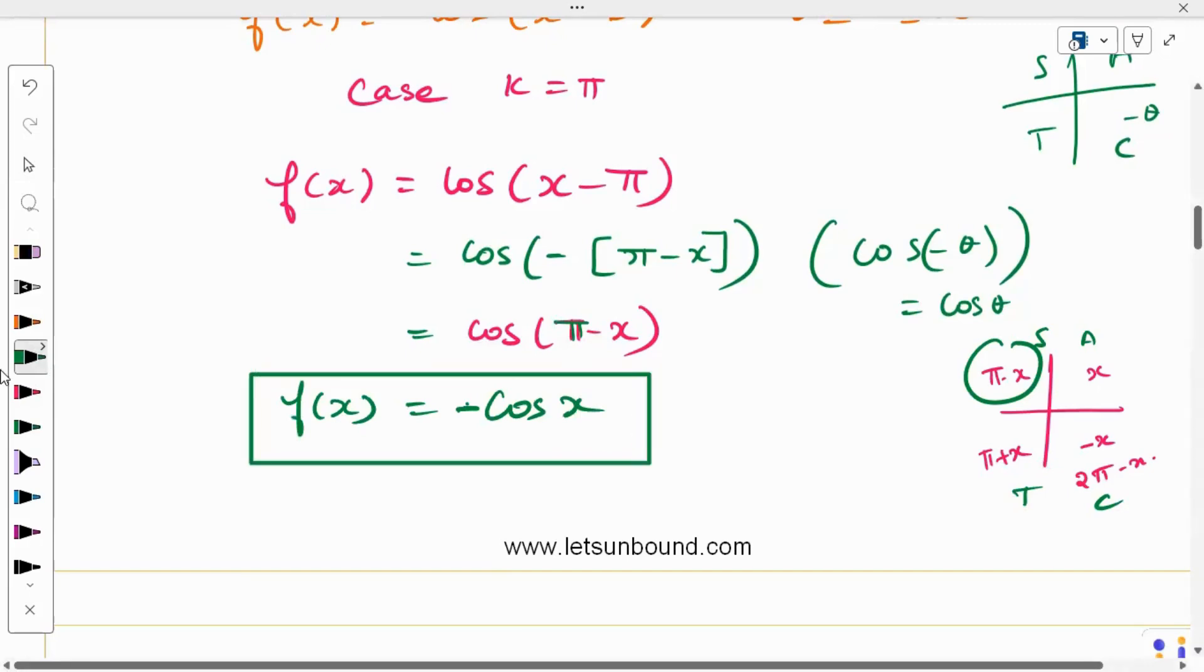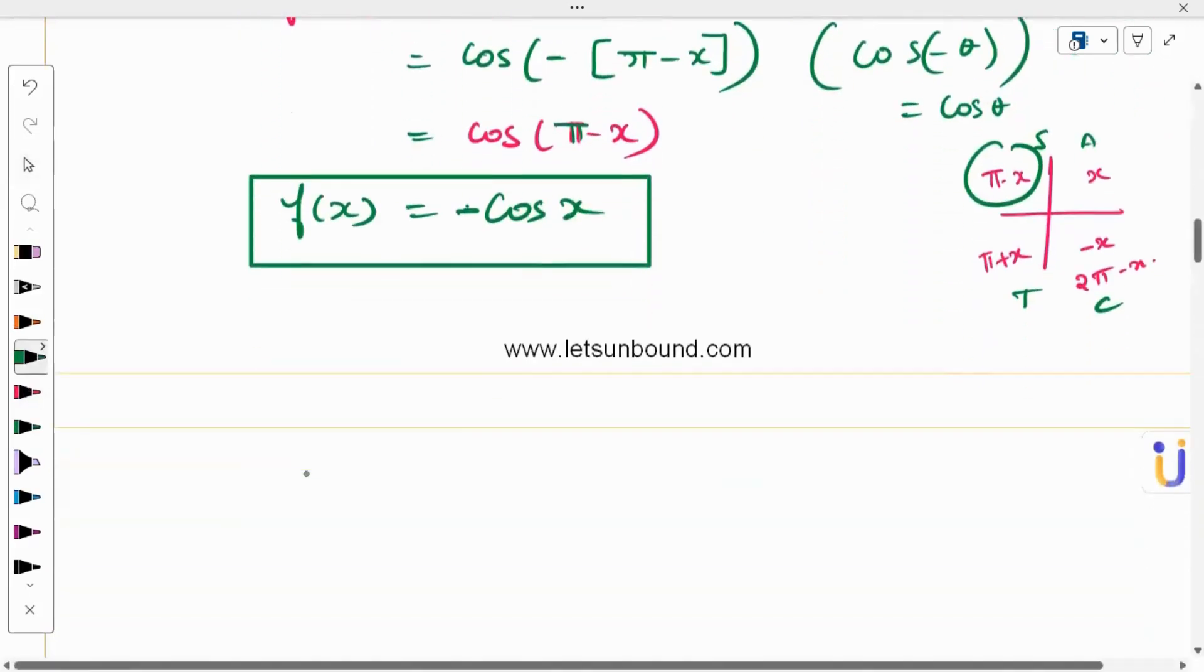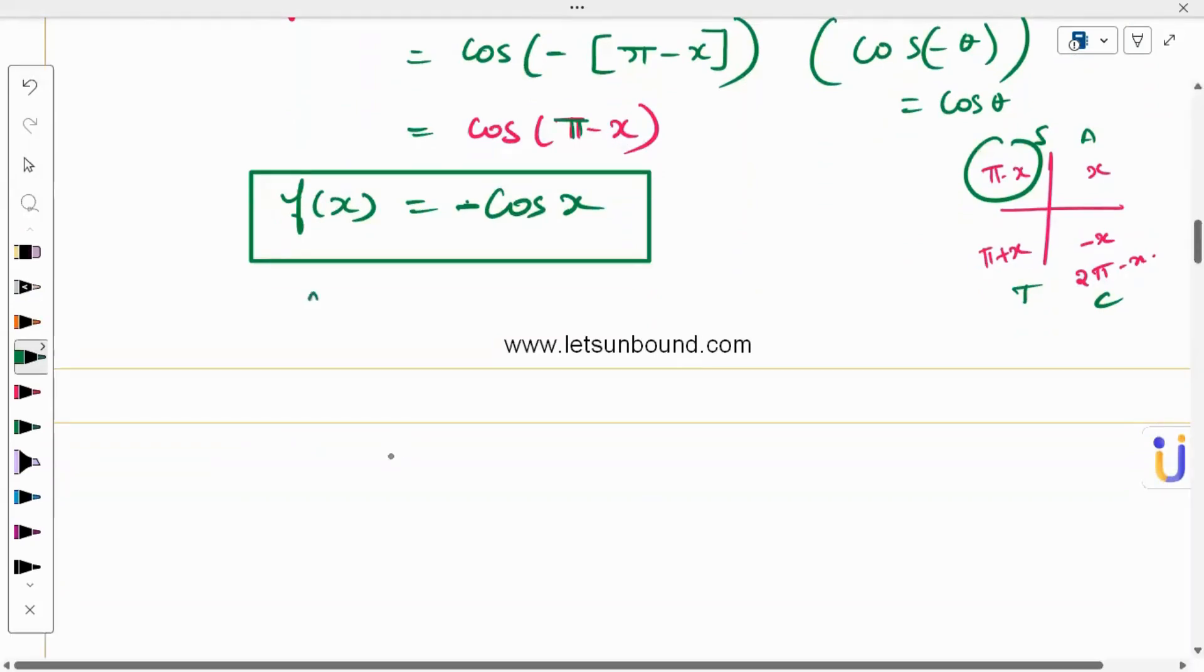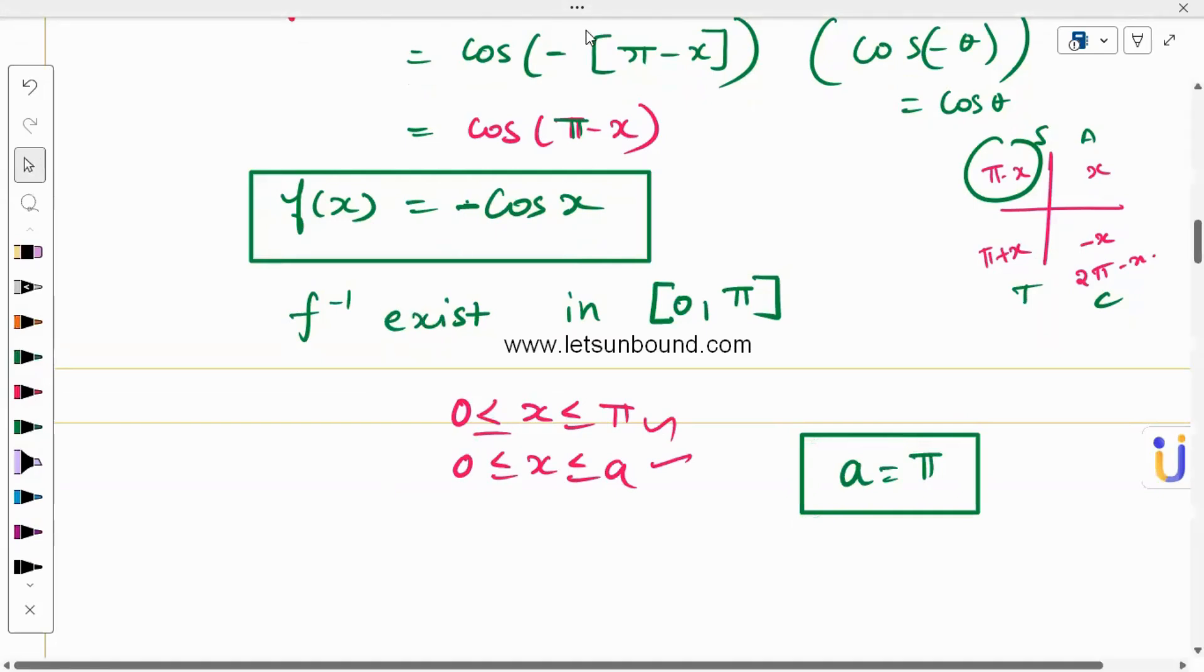That is a reflected version of the original cos function. Coming to this point, so this is one to one. So f inverse exists in this case, for the interval 0 to π, closed interval. So when x is from 0 to π, this is the condition in inequality form. And they have given what is the largest possible value is π. So a equals π for this particular case. I hope this might be clear.